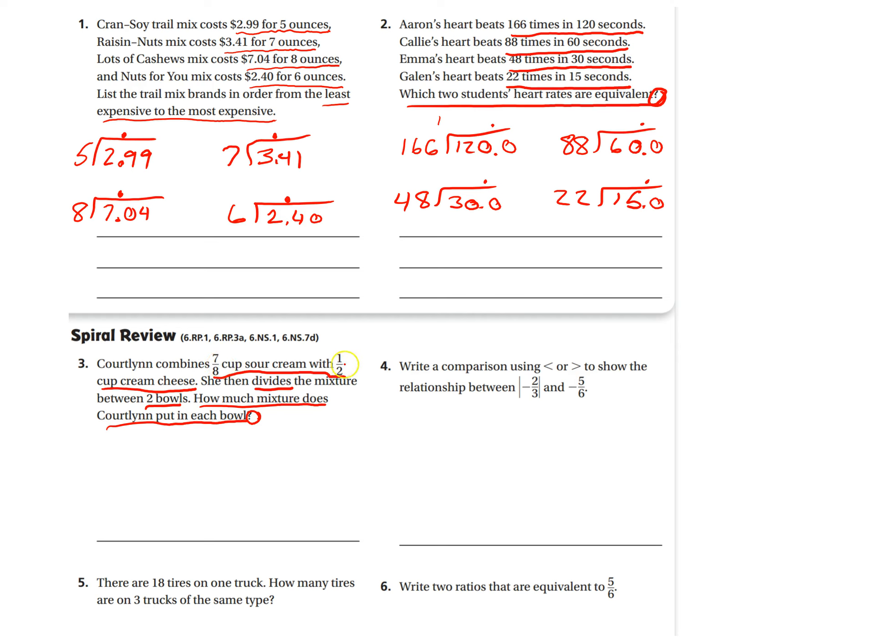So, I'm going to combine this. I'm going to make these equivalent fractions. So, I want to make them both 8ths. So, I already have 7/8. 1/2, if I want it to be equivalent with a denominator of 8, I'm going to have to multiply that by 4 to get 8. Kind of like what we were doing yesterday. Multiply the top by the same number. So, she's combining 7/8 and 4/8. That's going to be 11/8. And then she's dividing that into two bowls.